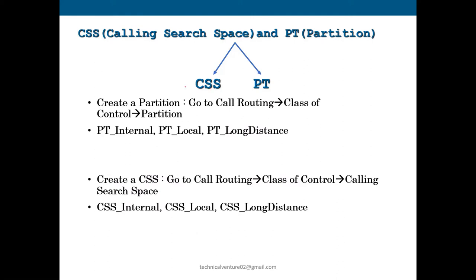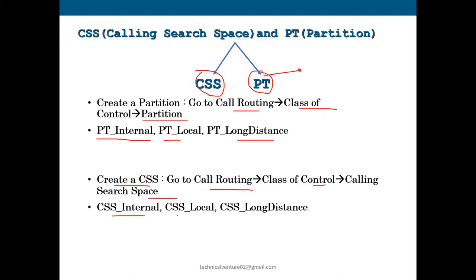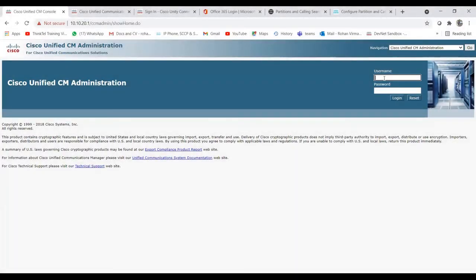Before creating a CSS, you need to create a partition first, because when configuring a CSS you have to add partitions under it in order to restrict call access. For the partition, go to Call Routing > Class of Control > Partition. In our example, I'll create pt_internal, pt_local, and pt_long_distance. Then for CSS, go to Call Routing > Class of Control > Calling Search Space, and I'll create css_internal, css_local, and css_long_distance. Let me log in to my CUCM and show you.